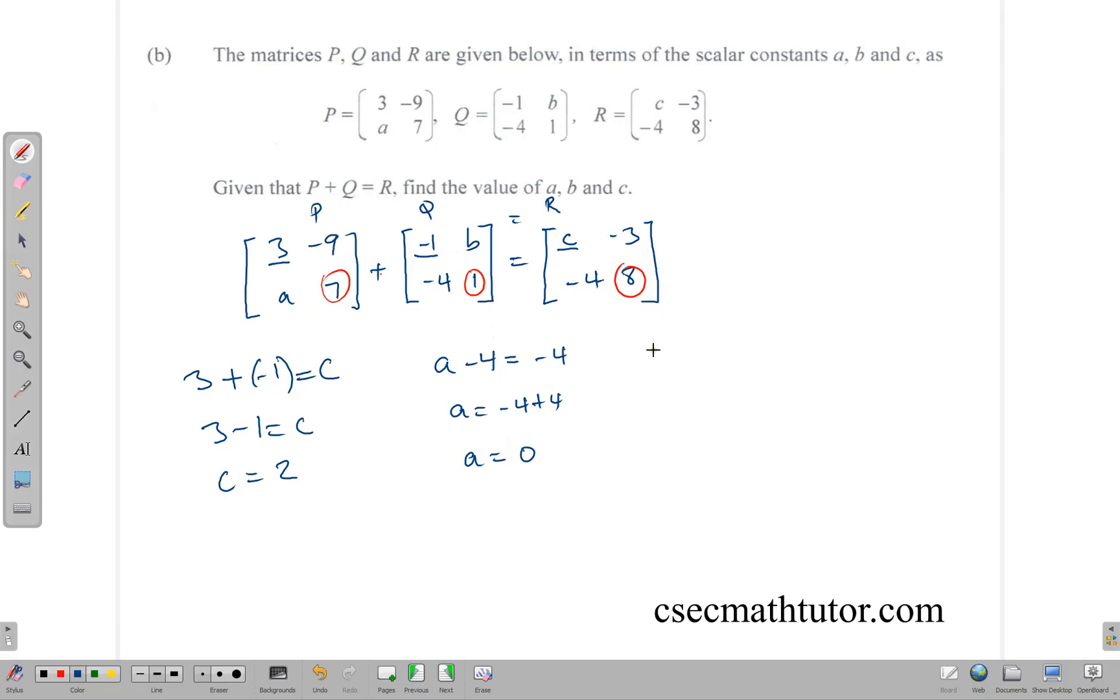Next, we have A. A in that position, minus 4 or plus negative 4 is equal to negative 4, which means A is equal to negative 4 plus 4, and that is 0. And the last one, B. So negative 9 plus B is equal to negative 3. Rearranging this equation, we have that B is equal to negative 3 plus 9, and therefore B is equal to 6.